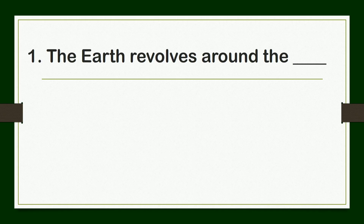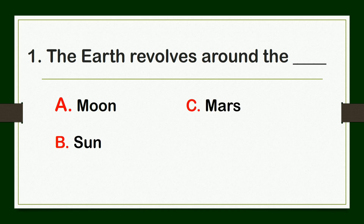First question: The Earth revolves around — A. the moon, B. Sun, C. Mars, or D. other planets.